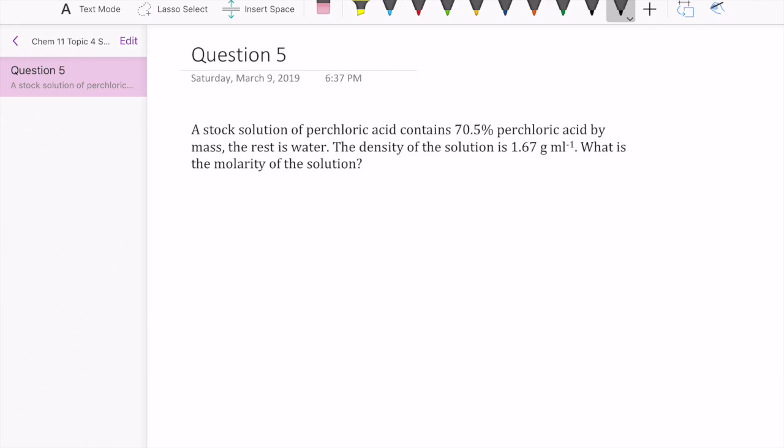This question gives us a stock solution of perchloric acid, and it says that it contains 70.5% of perchloric acid by mass, and it says the density of the solution is 1.67 grams per mil. What's the molarity of the solution?